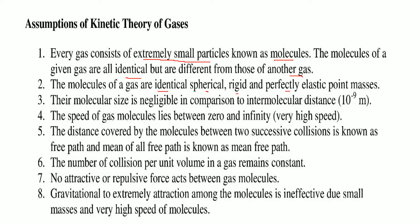They are point masses and perfectly elastic, rigid, spherical, and identical. Their molecular size is negligible compared to the intermolecular distance between them, which is of the order of 10⁻⁹ meters. The speed of the gas molecules can range from 0 to infinity. The distance covered by molecules between two successive collisions is known as free path, and the mean of all these free paths is known as mean free path.